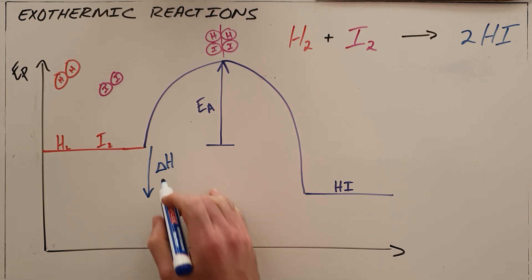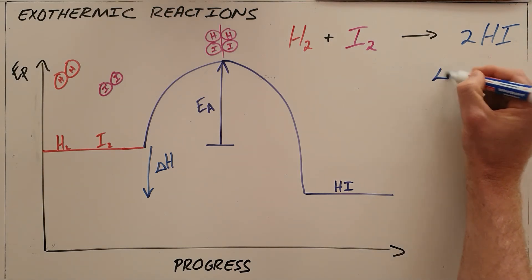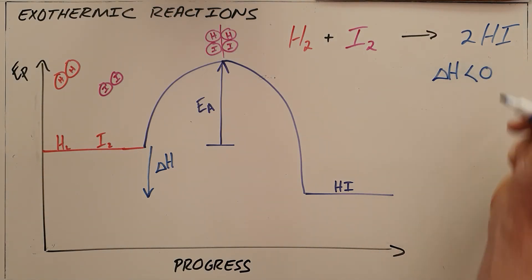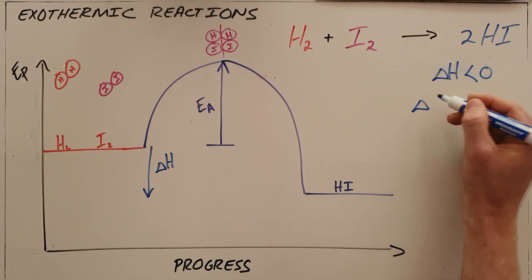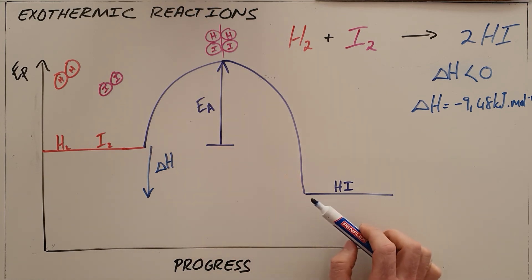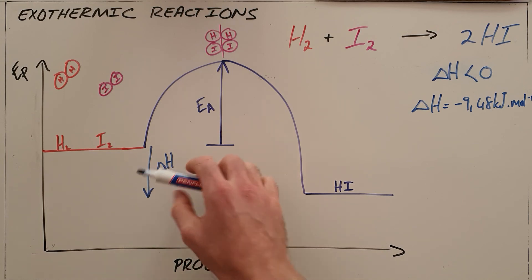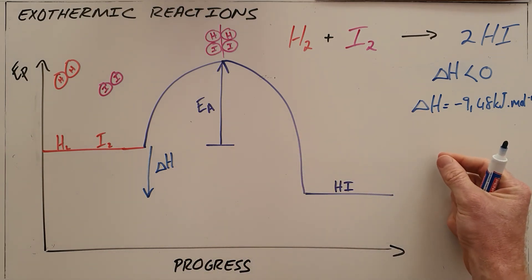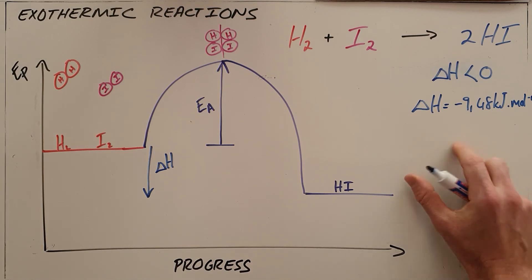As we can see in this reaction, the enthalpy change has been negative, meaning it has given off energy, and we would write that as either delta H is less than zero, or if you know for the specific reaction, this one for example has an enthalpy change of negative 9.48 kilojoules per mole that reacts. Both of these are just ways of saying that the products are more stable and therefore have a lower potential energy than the reactants, which means that this reaction, every time hydrogen and iodine combine to form hydrogen iodide, every time that happens a certain amount of energy is given off. We say that energy goes into the system and the system heats up.